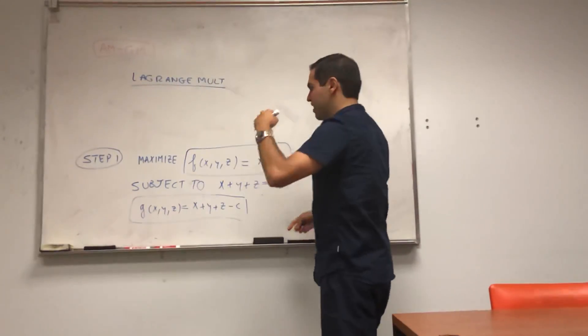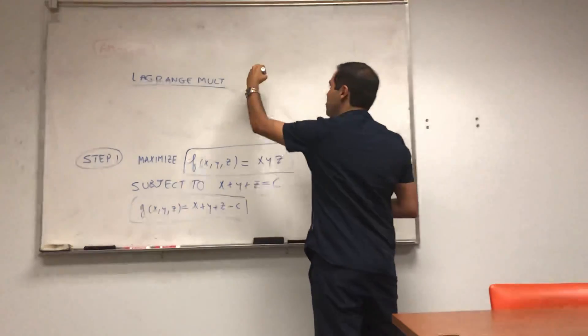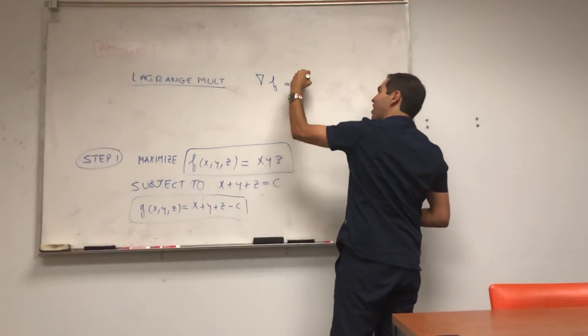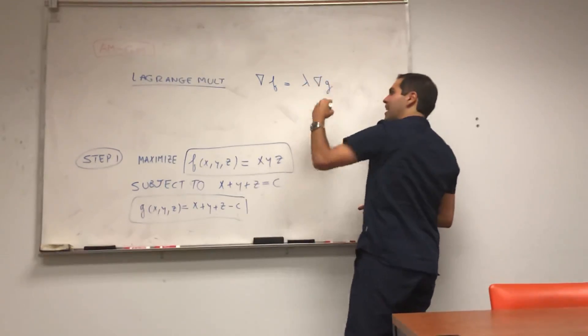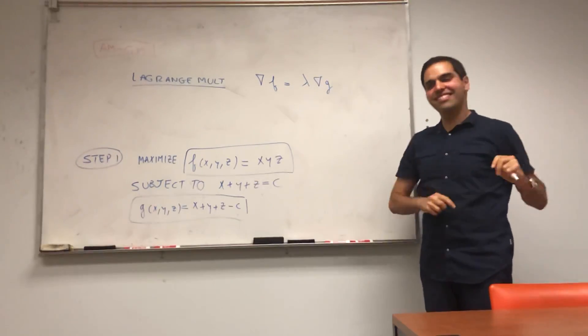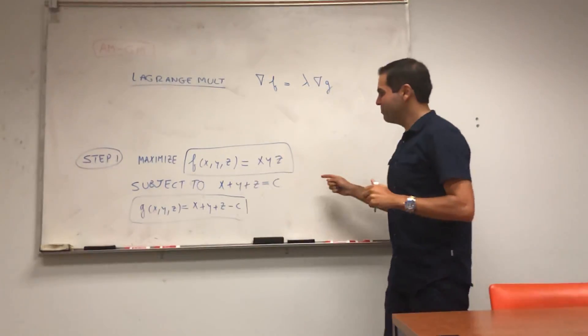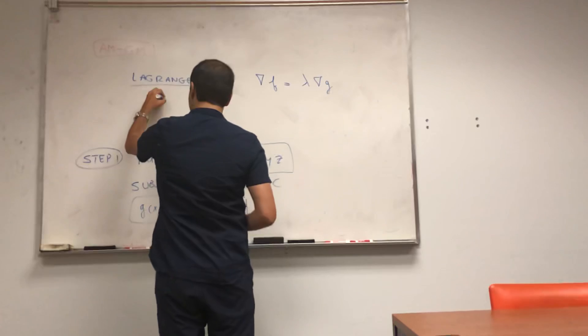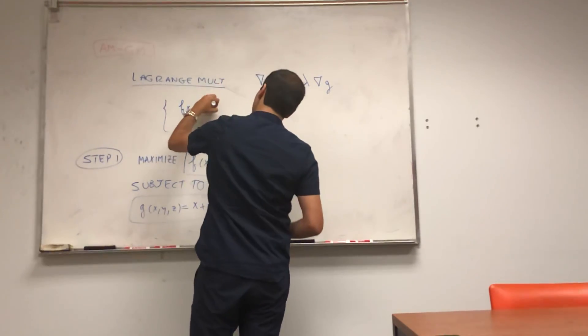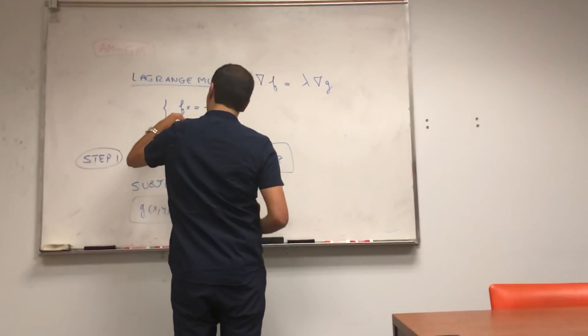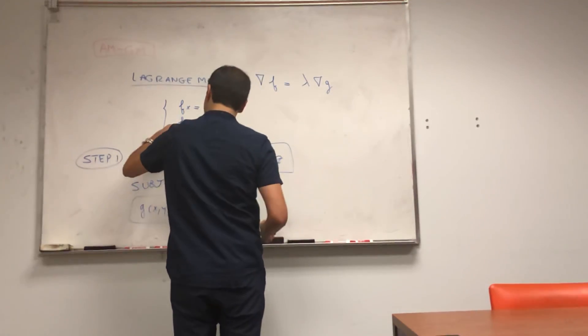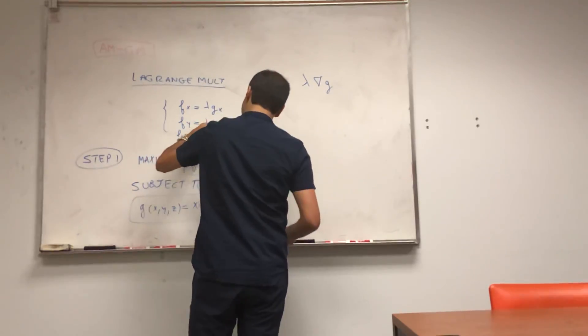All it says that, at a maximum or a minimum, the gradient of F equals to some constant lambda times the gradient of G. So the two gradients are parallel, but this is a completely different story. So in this case, what this says is that Fx is lambda Gx, and Fy is lambda Gy, and Fz is lambda Gz.